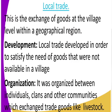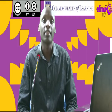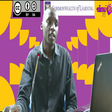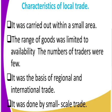Now how did local trade develop? Local trade developed as a result of wanting to satisfy the need for goods that were not available in the village. It was organized between individuals of the same clan and other neighboring communities — those communities that neighbored each other. Now this local trade had a number of characteristics — how could you identify that this is local trade and not international trade?